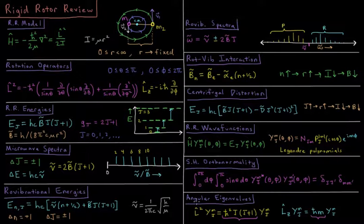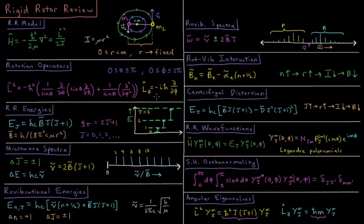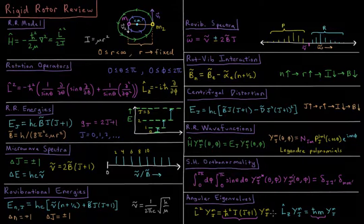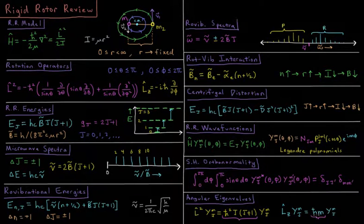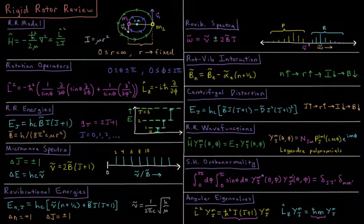Finally, we have the eigenvalues of our two rotational operators for these spherical harmonics. When you act the total angular momentum squared operator on the spherical harmonics, you get an eigenvalue of h-bar squared times j times (j plus 1). When you act the z-component of the angular momentum on the spherical harmonics, you get the eigenvalue h-bar times m. Links to each individual video are in the on-screen annotations as well as in the description below.